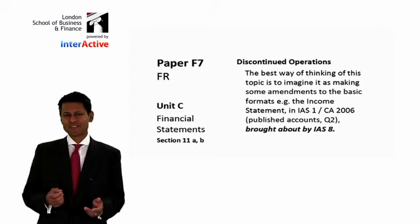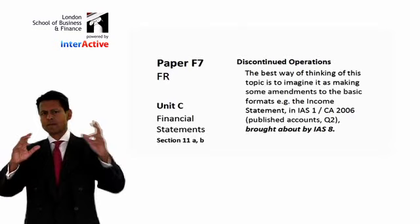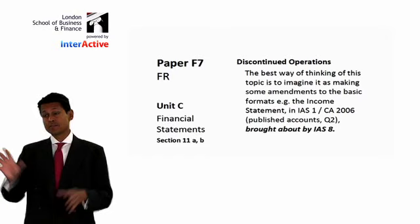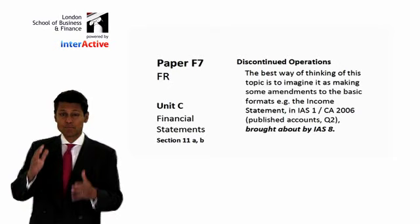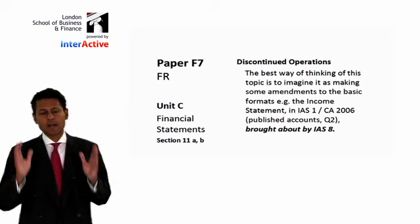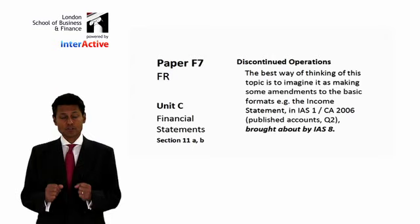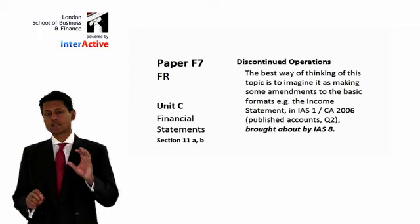The examiner could say to you: this company has decided to close down this division — tell me about it. What is a discontinued operation? And you've got to say things like it's a division that's closed down, the nature and focus of the company has changed, etc. Then the examiner might ask you to do some numbers. It could come up as part of questions four and five on standards, or in question two on published accounts.